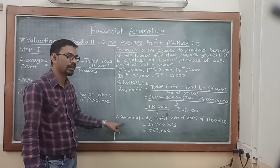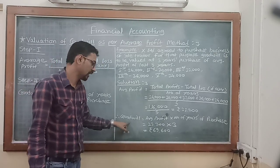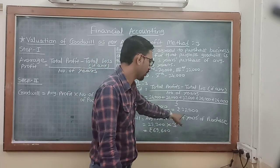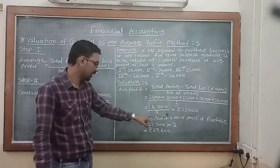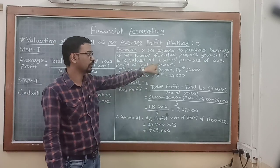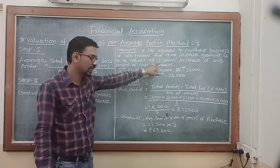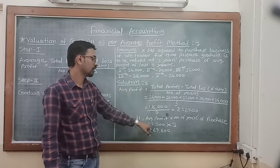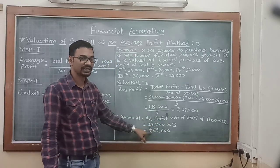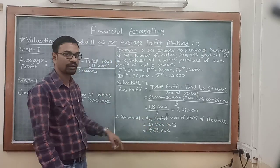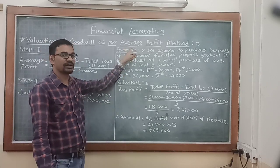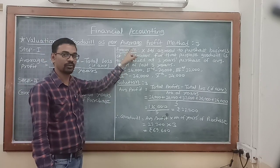Now we calculate the value of goodwill. The formula is average profit multiplied by number of years of purchase. The average profit is 23,200, and the number of years of purchase given in the problem is 3 years. Multiplying 23,200 by 3, we get 69,600. This is the value of goodwill. In this way, we solve the problem according to the average profit method. Thank you.